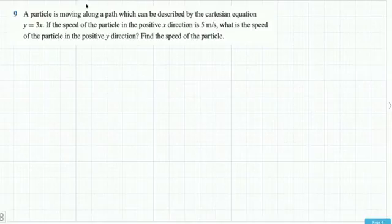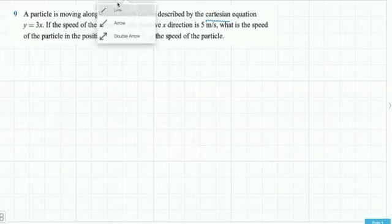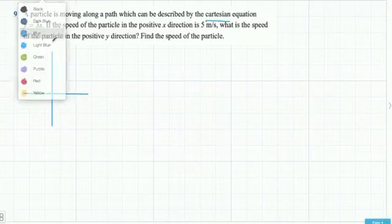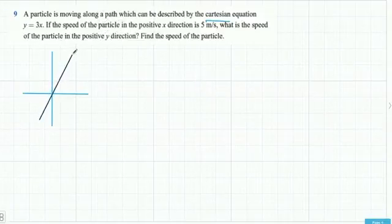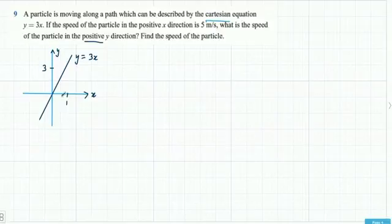This question is similar to where we looked at finding velocity, sketching it as a Cartesian, and using that to find direction as an angle. A particle is moving along a path described by y equals 3x. Sketching that: it's a straight line with slope 3 — going across 1 and up 3.